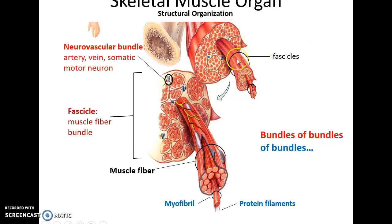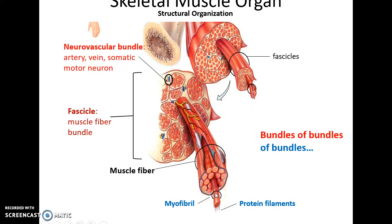Fascicles have many muscle cells within them. If you look at a fascicle, you see many muscle cells called muscle fibers. And if you look at the muscle fibers, you see within them long columns of protein structures called myofibrils, all bundled up inside the muscle fiber. If you look at the myofibrils, they are made up of bundles of protein filaments — bundles within bundles within bundles.